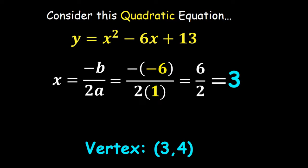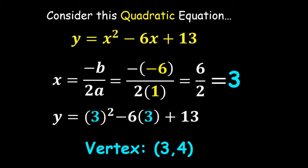To get the y-value, plug in x equals 3 carefully. That gives 9 minus 18 plus 13, which comes out to 4 — the same y-value as before. It turns out these two equations are just in different forms, which is why they give the same vertex.